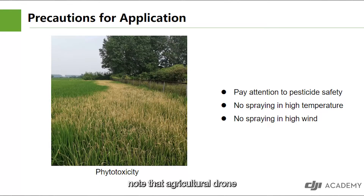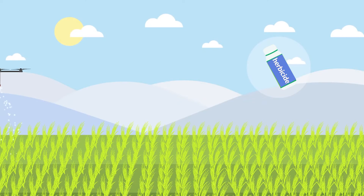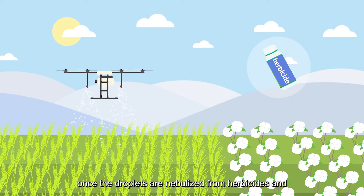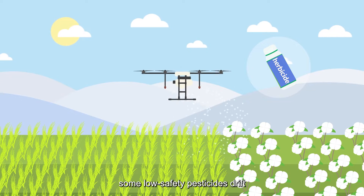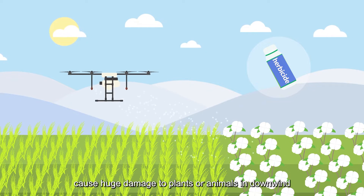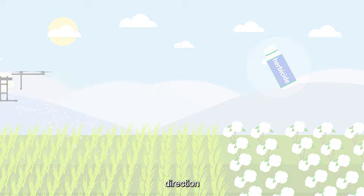However, we should also note that agricultural drones fly at a high altitude, with small droplets being easy to drift and evaporate. Once droplets nebulized from herbicides and some low-safety pesticides drift, they will cause huge damage to plants or animals in the downwind direction.